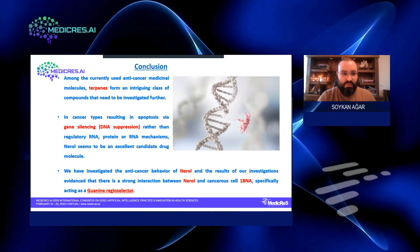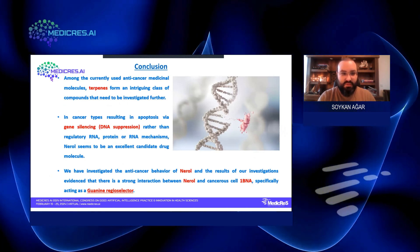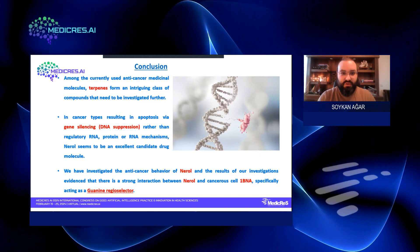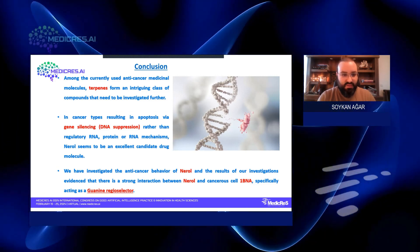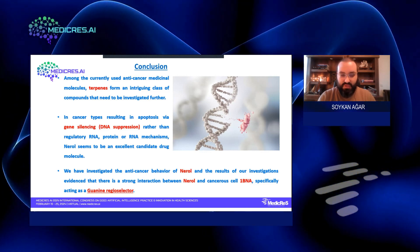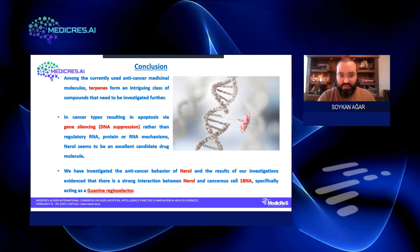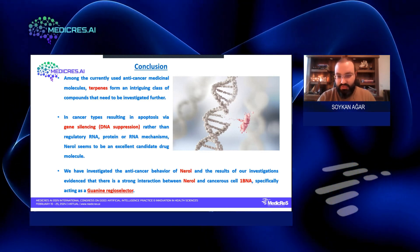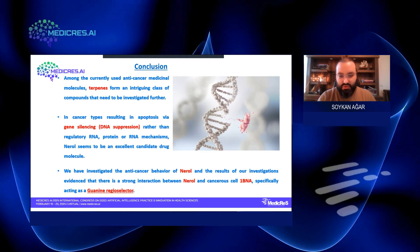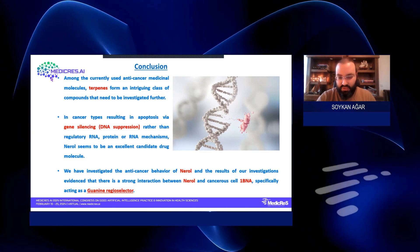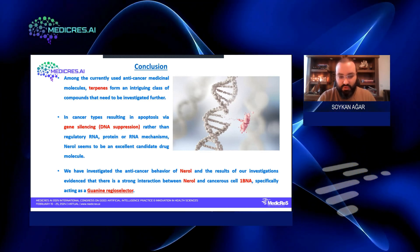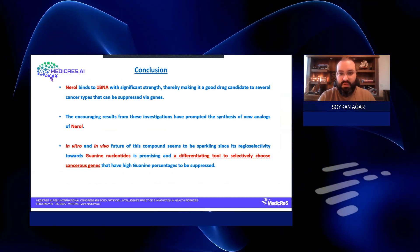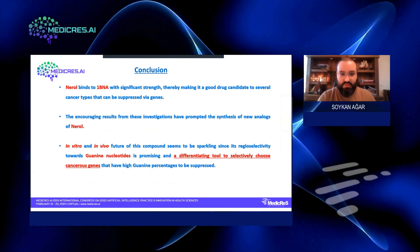To conclude, among the currently used anti-cancer medicinal molecules, terpenes form an intriguing class of compounds that need to be investigated further for their anti-cancerous tendencies, affinities, and cancer types resulting in apoptosis via gene silencing and DNA suppression, rather than regulatory RNA or protein mechanisms. Nerol seems to be an excellent candidate drug molecule. We have investigated the anti-cancer behavior of Nerol and the results evidence a strong interaction between Nerol and cancer cell 1BNA — the right-helical DNA structure of humans — specifically acting as a guanine rigid selector. Nerol binds to 1BNA with significant strength, making it a good drug candidate for several cancer types suppressible via genes.